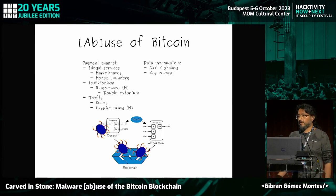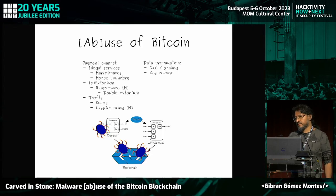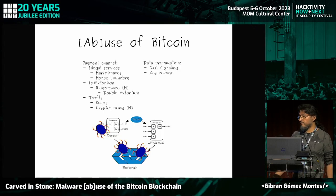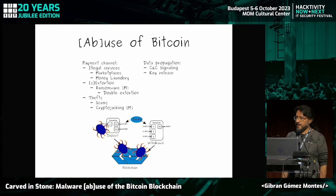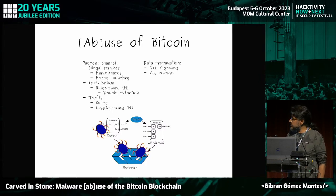We have also seen many thefts — from exchanges, users, and wallets — as well as investment scams and romance scams. Another form of abuse is stealing computing power by installing malware that uses your PC to mine cryptocurrency. While Bitcoin was mined this way in the past, most cryptojacking malware today mines Monero instead.